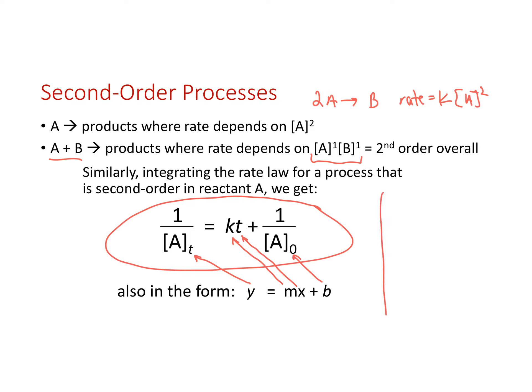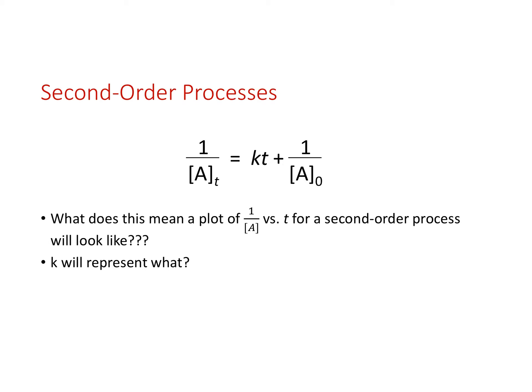The important thing is that now if I plot 1 over concentration versus time, I should get a linear relationship if it is indeed a second order reaction. What does a plot of 1 over concentration versus time for a second order reaction look like? It should yield a straight line. And k is the slope of that line. Using the integrated rate law for a second order reaction, the slope gives me the rate constant, and then I can calculate the concentration at different points in time.